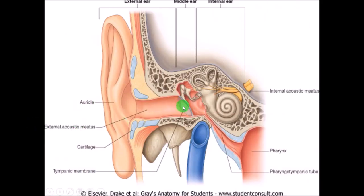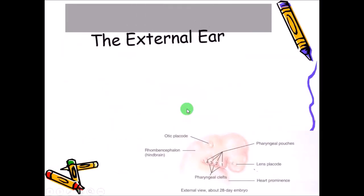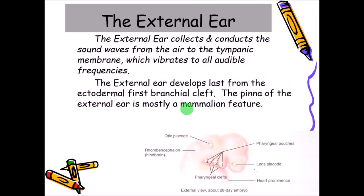Here is the tympanic membrane. This whole region from the auricle to the tympanic membrane is the external ear. Sound waves that hit the auricle or pinna are transmitted through this tube to the tympanic membrane. The audible frequency range is 20 to 20,000 Hz. Regarding development, the external ear developed from the ectodermal first branchial cleft.